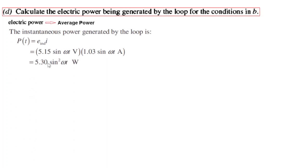Then calculate the electric power being generated by the loop. Now when we talk of electric power we actually mean average power. We have the parameters for instantaneous power. So instantaneous power is e induced and i induced or i flowing and these are in terms of t. So instantaneous values. So this is the instantaneous power.